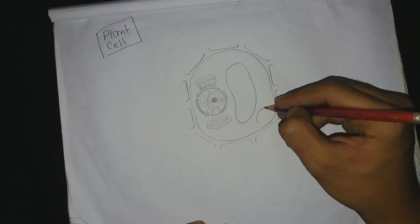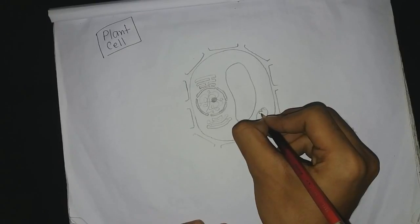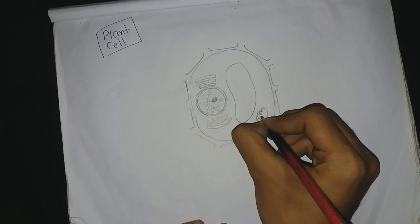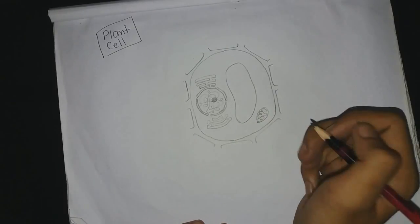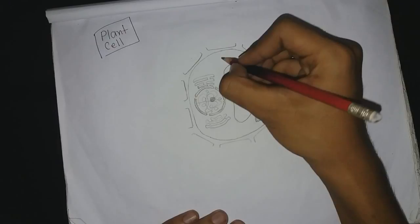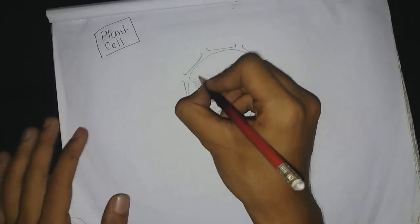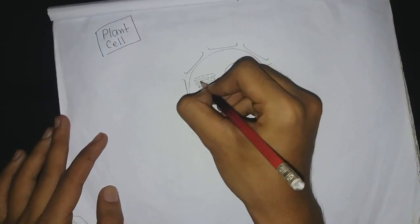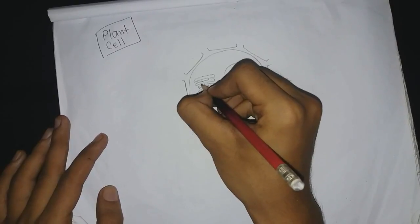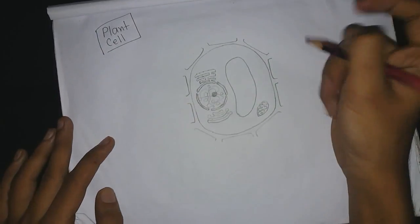Now I will draw a mitochondria because this is called the powerhouse of the cell, you know, so it's important. I'm also thinking that I will make a video about this mitochondria too. Then let me draw it here. Let me give some cristae so that it looks like this.